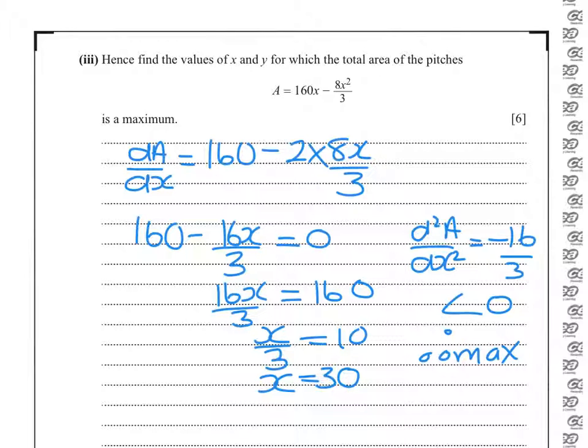Final part of the question: we know what x is, so we need to work out what y is. We calculated in the previous part that y is 80 minus 4x over 3. So in this case, y is 80 minus 120 over 3, which is 80 take away 40, which is 40.